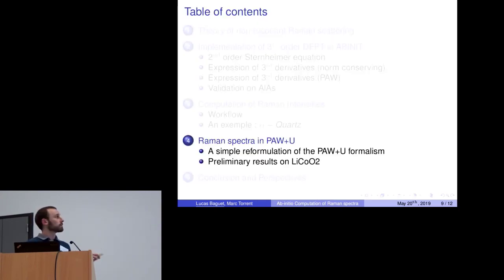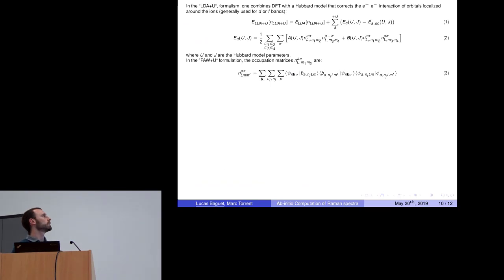At last, as we have done the work for PAW, it was not too complicated to adapt it to the PAW plus U case. We were motivated to do it. In the LDA plus U formalism, we combine DFT with the Hubbard model that corrects the electron-electron interactions of orbitals localized around the ions. Basically, we have additional terms in the expression of the energy and the Hamiltonian, which involve occupation matrices here.